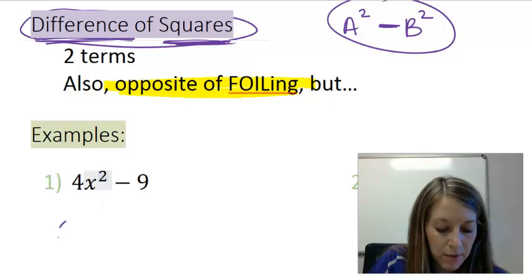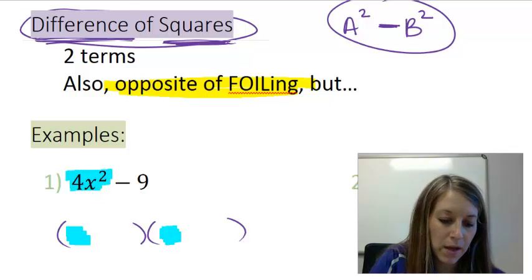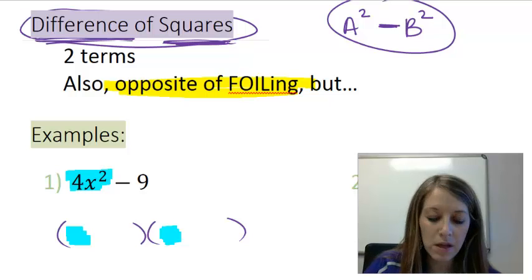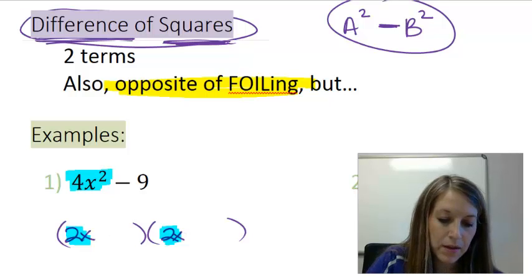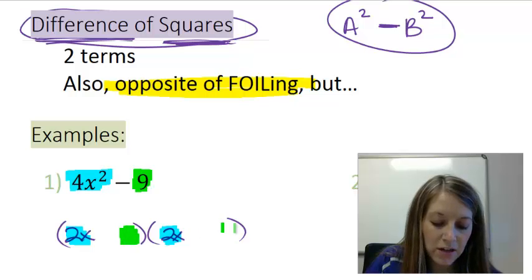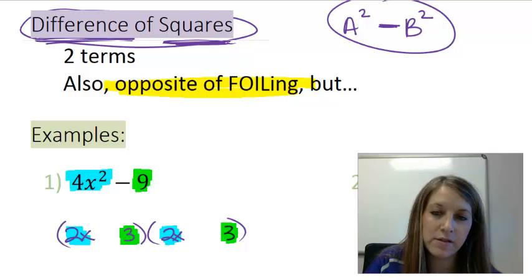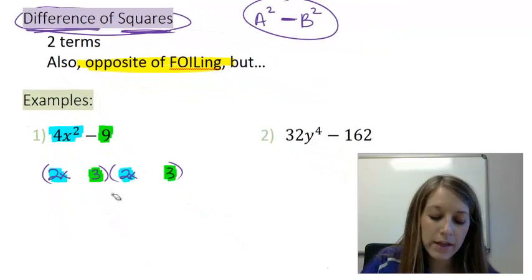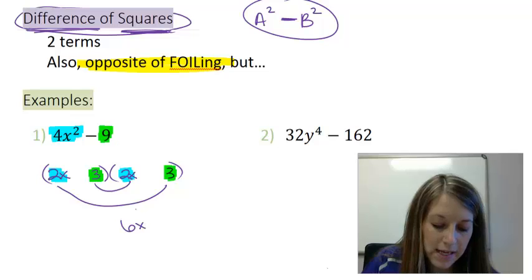So to factor this, I'm going to set up my two sets of parentheses. In my first places, I'm going to come up with factors of my first term there. And since they are squares, we want to split them evenly, where I have 2 times 2 and x times x. Now from my last term of 9, I want to come up with factors to give me that. And again, since it's squares, we will split them evenly. 3 times 3 gives me 9. Now let's double check our outside and our inside and let's see what happens. Our outside gives us a 6x. Our inside gives us a 6x.